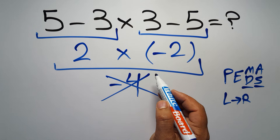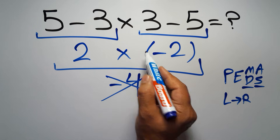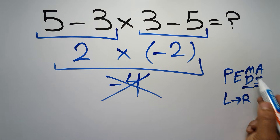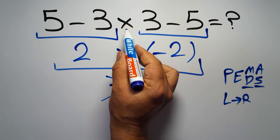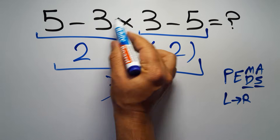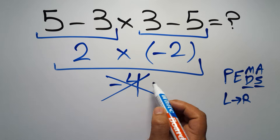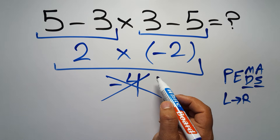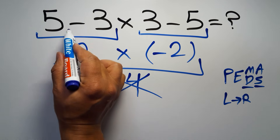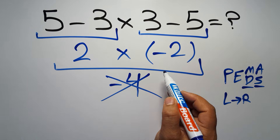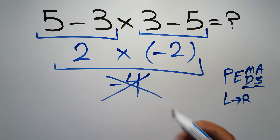In this expression we have two subtractions and one multiplication. According to the order of operations, multiplication has higher priority than subtraction because multiplication comes before subtraction. So here, first we have to do this multiplication, then this subtraction, and finally this subtraction. If we do either subtraction before this multiplication, it is wrong.